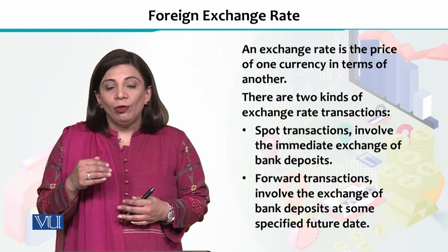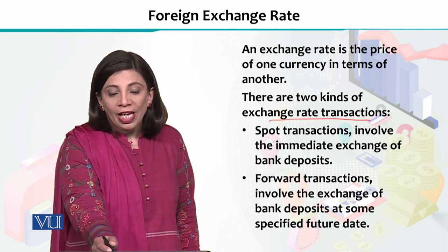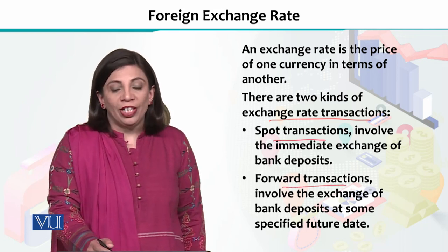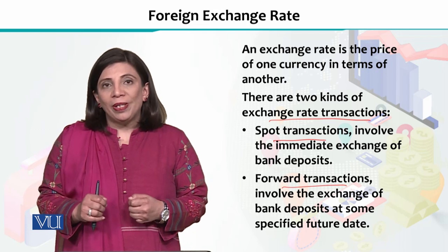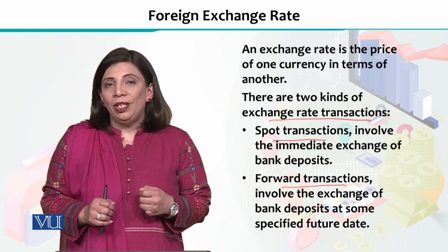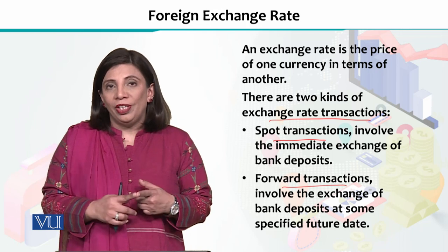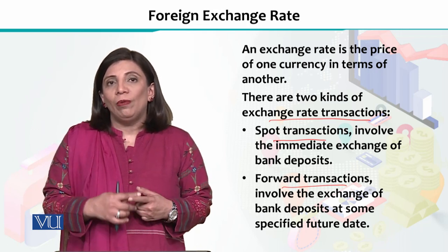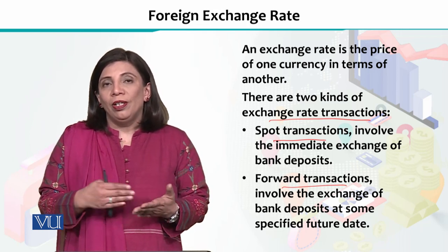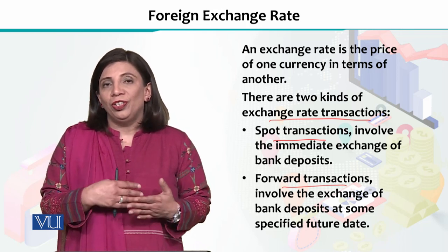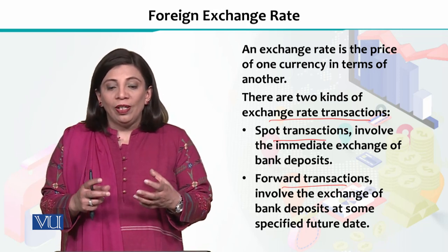Foreign exchange के अंदर दो तरह की transactions होती हैं — एक है spot transaction और दूसरी है forward transaction। Spot transaction का मतलब है: मान लीजिए कल आपकी flight है, आपने अमेरिका जाना है, आपके पास Pakistani rupees हैं और आपको US dollars चाहिए। आप किसी foreign exchange dealer के पास जाएंगे, वो on the spot rate quote करेगा — State Bank का आज का rate — और उसके हिसाब से आप PKR देंगे और US dollars मिल जाएंगे। यह spot transaction कहलाती है।